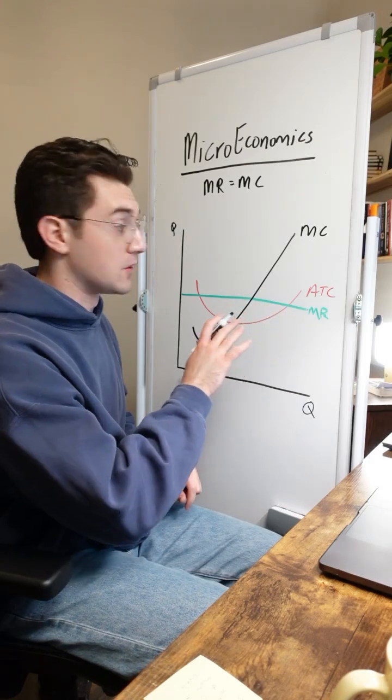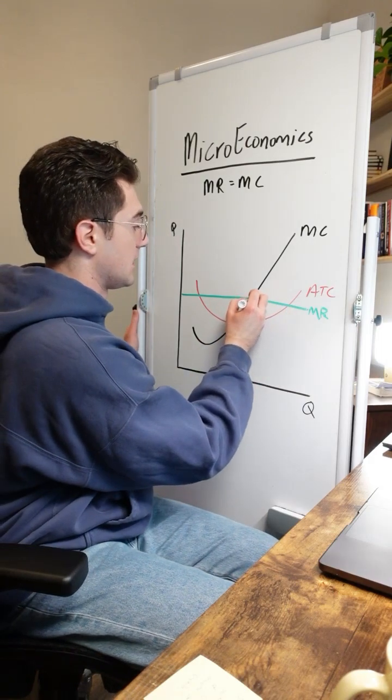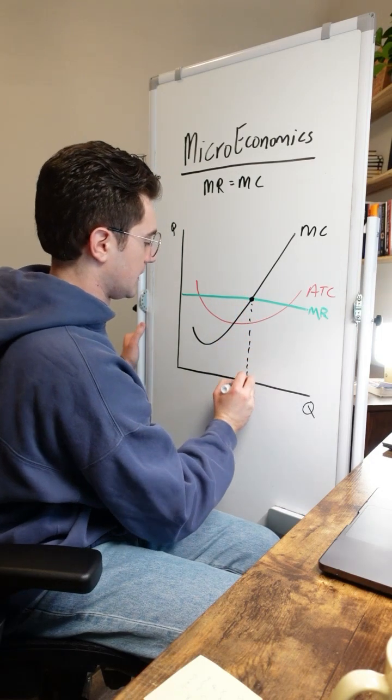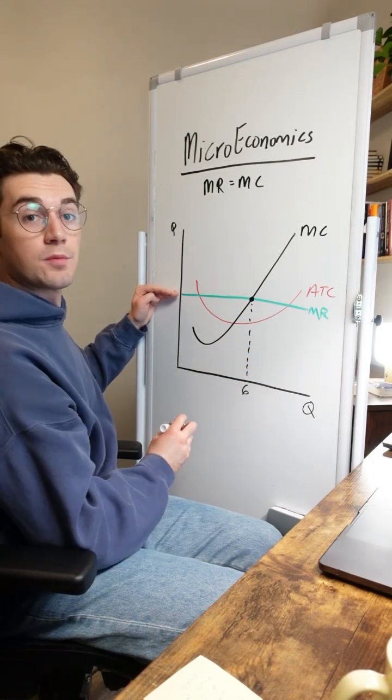With perfect competition, the MR equals MC point's really easy. We just got to pinpoint right here. MR, MC, meaning that this firm is going to output, we'll say six units at this price right here.